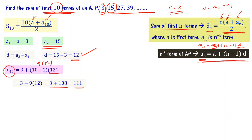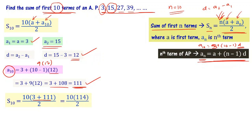The 10th term is 111. Now substituting a equals 3, aₙ equals 111, and n equals 10 into the sum formula: S₁₀ equals 10 into (3 plus 111) divided by 2, which is 10 into 114 divided by 2. This can be written as 5 into 114, which equals 570.